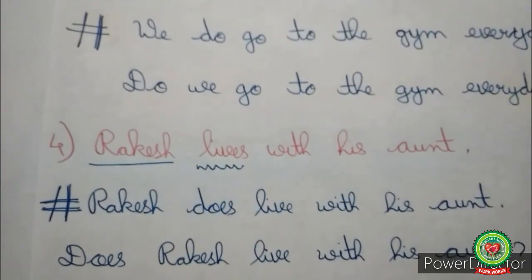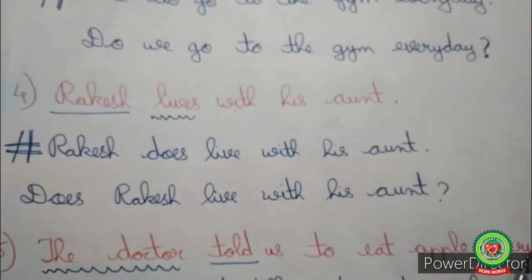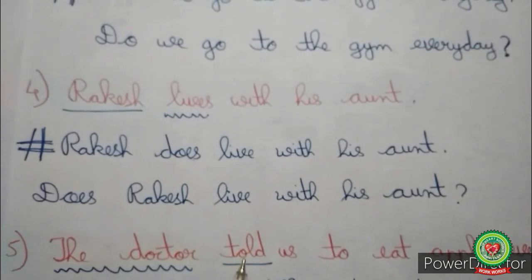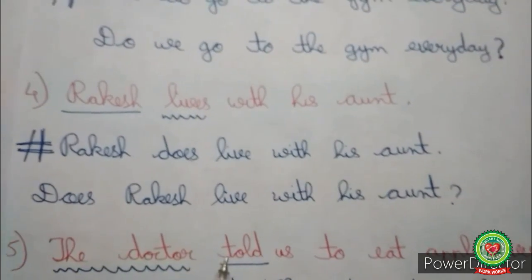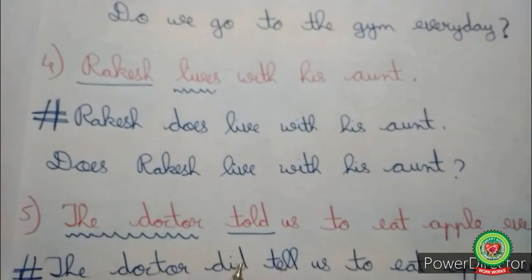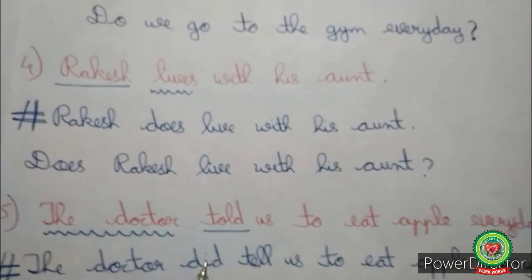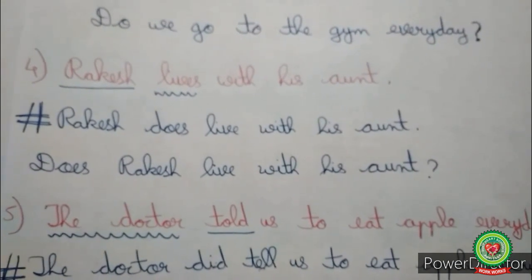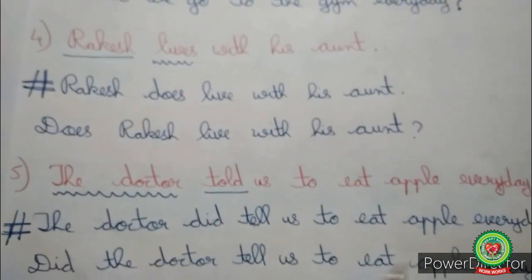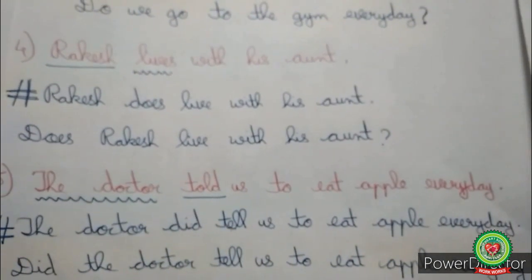One more example: 'The doctor told us to eat apple every day.' Told is the past form of verb, so we add did as the helping verb: 'The doctor did tell us to eat apple every day.' Told has been changed to did tell — that is did plus the present form of the verb. Placing did at the beginning: 'Did the doctor tell us to eat apple every day?' Did has been placed at the beginning and a question mark inserted at the end.